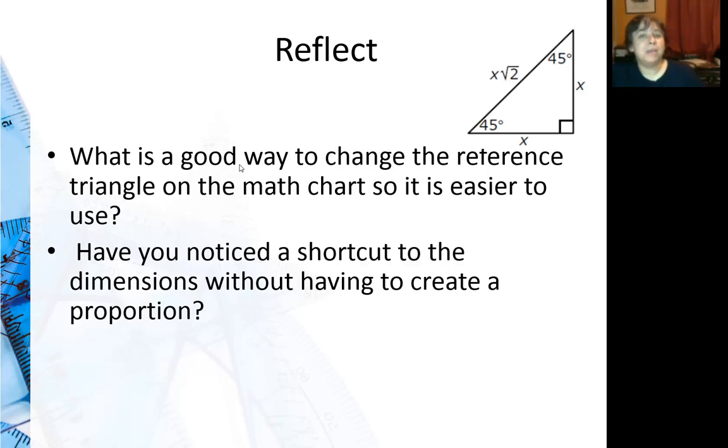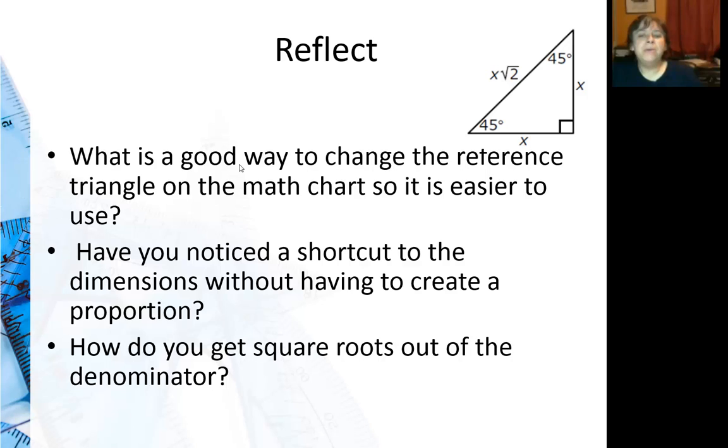Have you noticed a shortcut to the dimensions without having to create a proportion? That's what I was just talking about. In that case, those x's might come in handy. How do you get square roots out of the denominator? Hopefully you'll answer that as you're going to rationalize it, which means multiply by square root over square root. And so your square root effectively moves to the numerator and you have a regular rational number in the denominator.